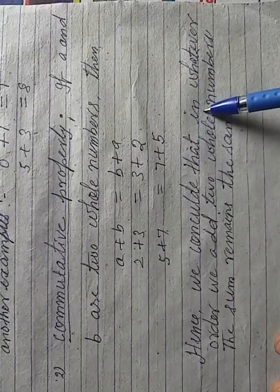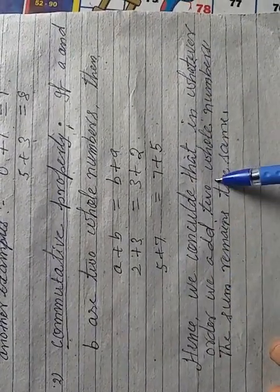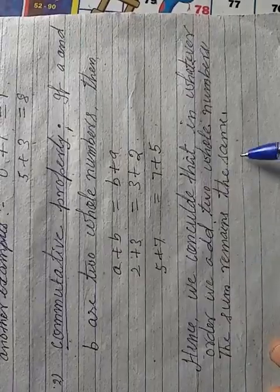Hence, we conclude that in whatever order we add two whole numbers, the sum remains the same. Now I am turning the page.